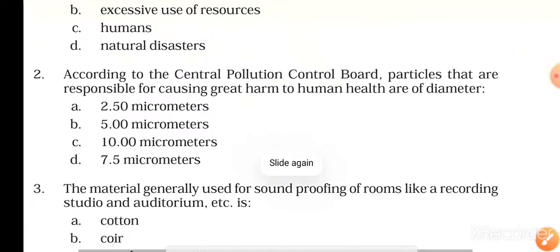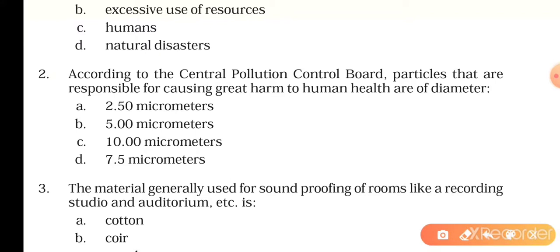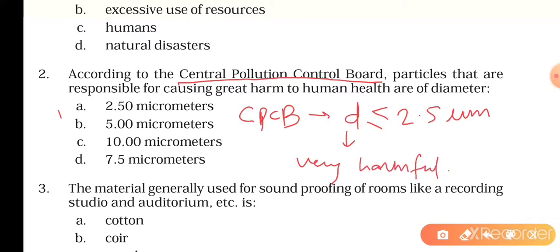Coming to the next question: according to the Central Pollution Control Board, particles that are responsible for causing great harm to human health are of diameter 2.5 micrometers, 5 micrometers, 10 micrometers, or 7.5 micrometers. As you know, according to CPCB, the particles of diameter less than or equal to 2.5 micrometers are very harmful, so the right answer will be 2.5 micrometers.